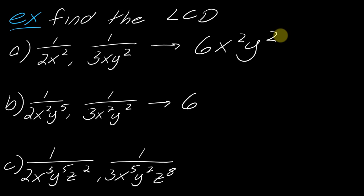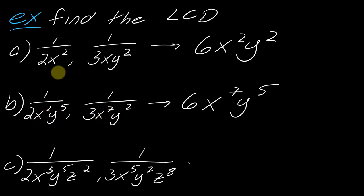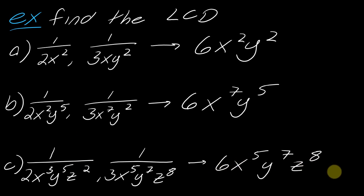The number part is the same for all three examples, so for example (b) the answer is x to the seventh y to the fifth — representing each variable with its highest exponent. For example (c) the LCD is 6x to the fifth y to the seventh z to the eighth, again using the highest exponents. Pretty straightforward when you just have extra variables in the denominator like this.